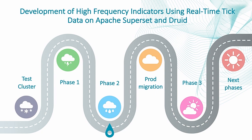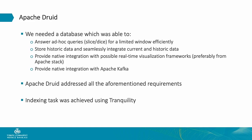We needed a database able to answer ad-hoc queries for a limited window efficiently, store historic data, seamlessly integrate current data with historic data, provide native integration with real-time visualization frameworks, and provide native integration with Apache Kafka. The answer was Apache Druid. Druid allowed us to index our real-time data and store historical data in HDFS, with the possibility to query both real-time and historic data together. Thanks to these capabilities, we addressed all the aforementioned requirements.